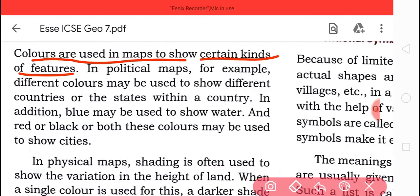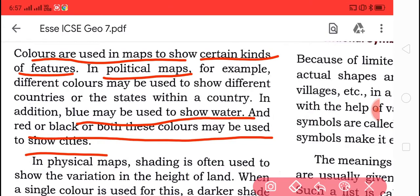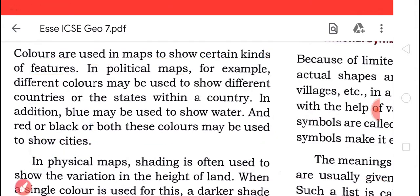In political maps, for example, different colors are used to show the states of a country. In addition, blue may be used to show the water, red and black both are used to show the cities. Now in physical maps...